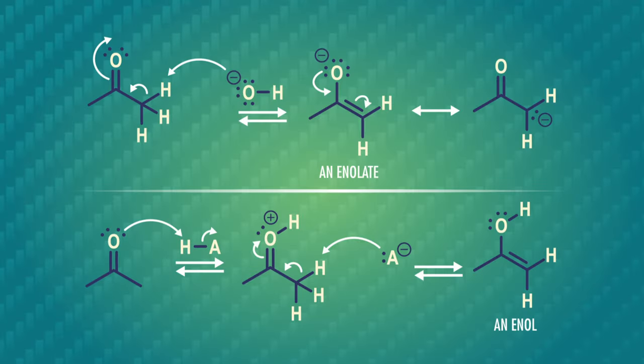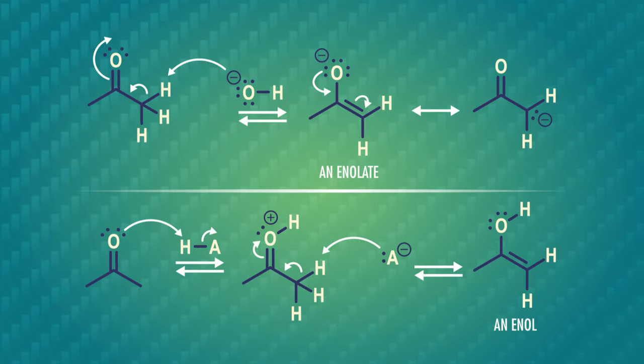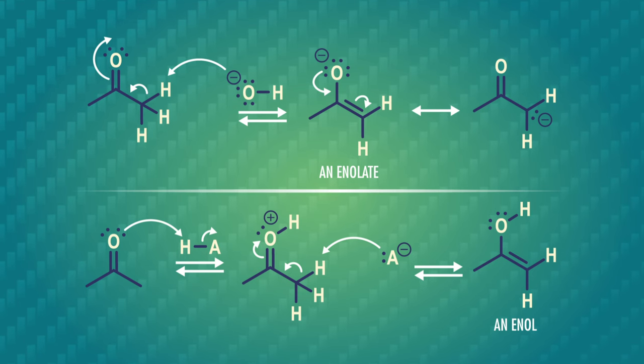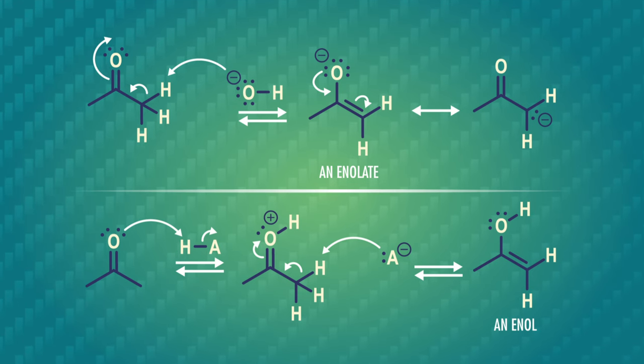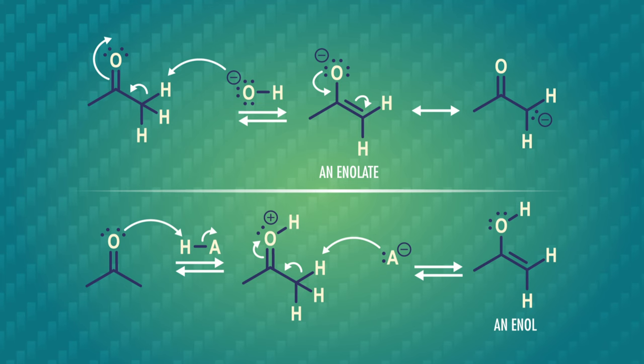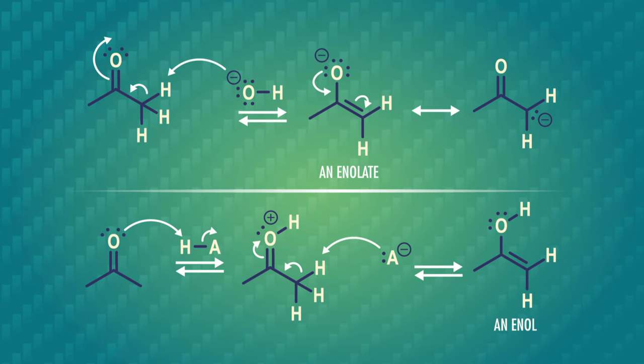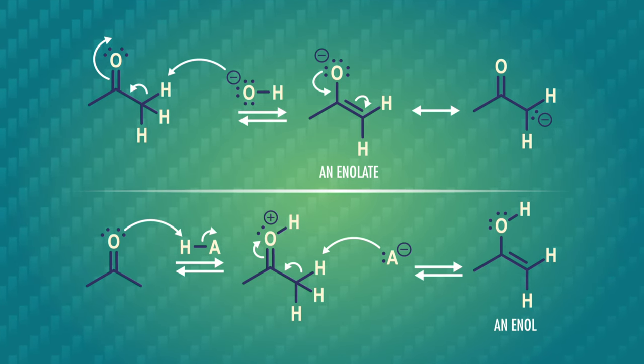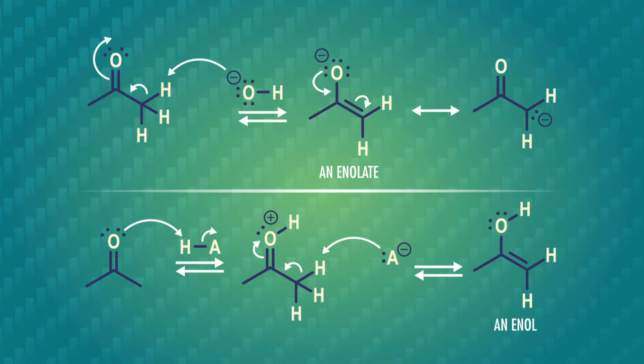The 'ald' part of the name comes from the fact that the reaction involved two aldehydes, before we figured out ketones could be involved too. And the 'ole' part comes from the alcohol, because the product is a beta-hydroxy-carbonyl compound. Aldol reactions can be acid-catalyzed or base-catalyzed, and they begin by converting an aldehyde or ketone to an enol in acid, or enolate in base, like we did in episode 43.